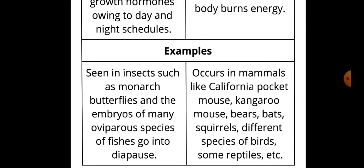Examples: Diapause is seen in insects such as monarch butterflies, and the embryos of many oviparous species of fishes also undergo diapause. Hibernation occurs in mammals like the California pocket mouse, kangaroo mouse, bears, squirrels, different species of birds, and some reptiles.